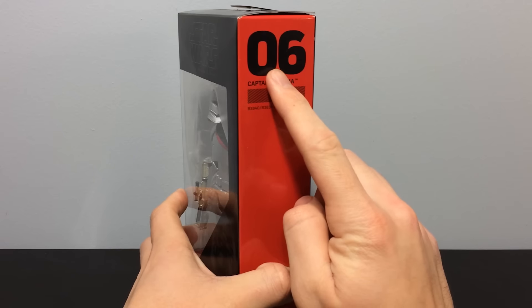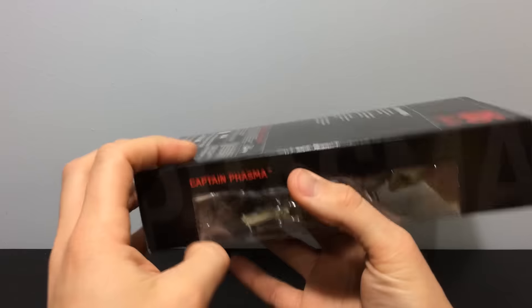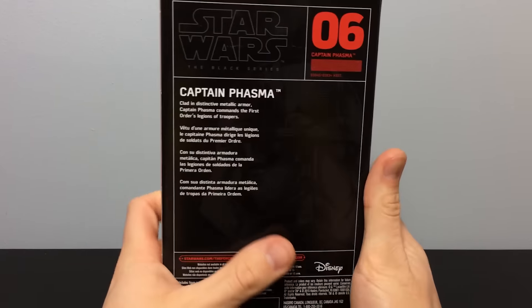She is, what, a Wave 3? Number 6 Black Series character on the left side. You can see the window. You can see her there. Captain Phasma. Phasma in big gray letters. Oversized.